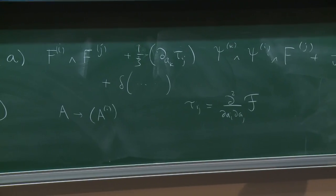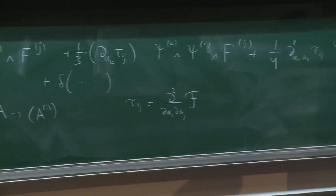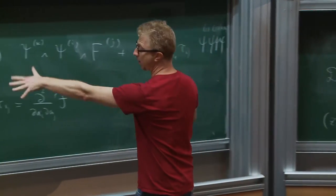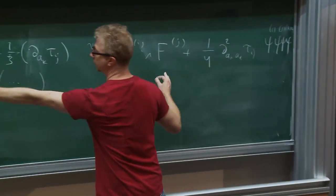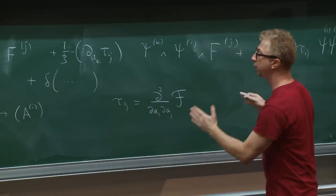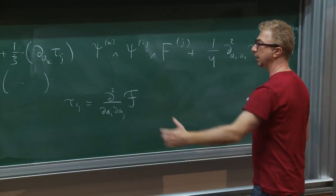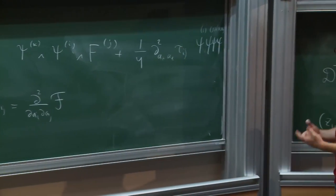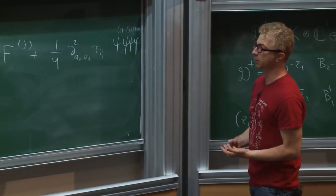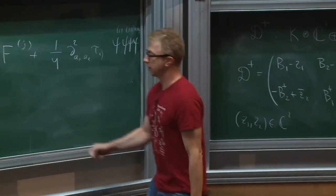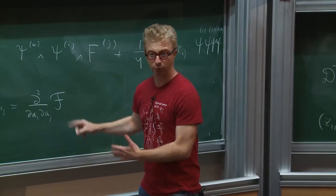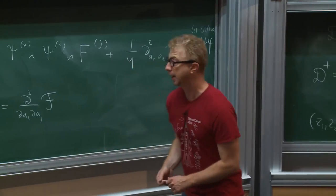When you expand around a configuration where sigma has a generic expectation value, you only see the maximal torus as the gauge group. The gauge symmetry becomes less restrictive and supersymmetry allows more general couplings where curvatures of different gauge fields are coupled to scalars through a matrix-valued interaction.